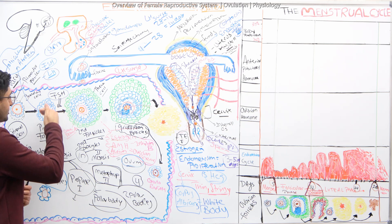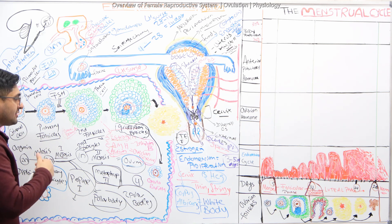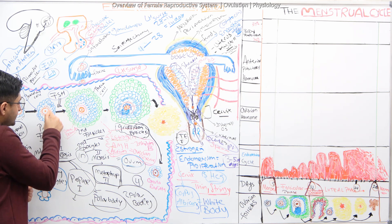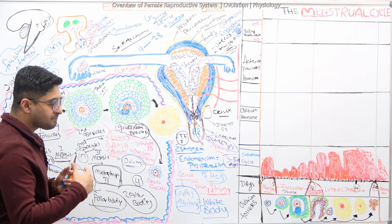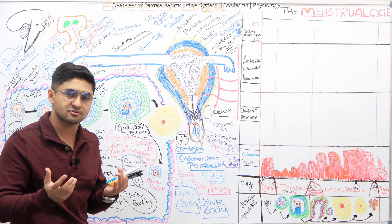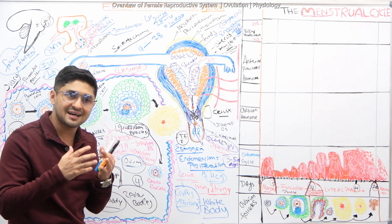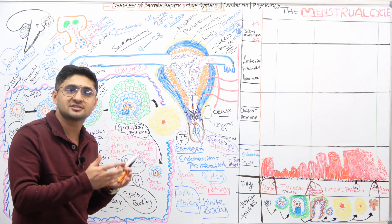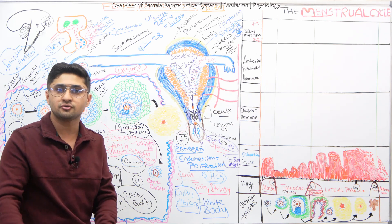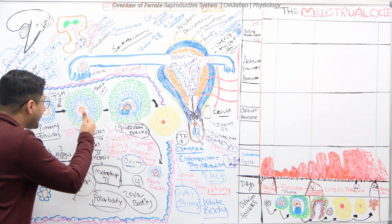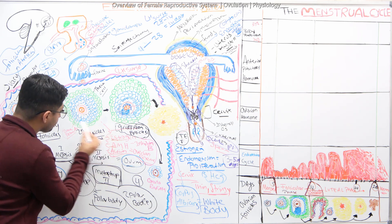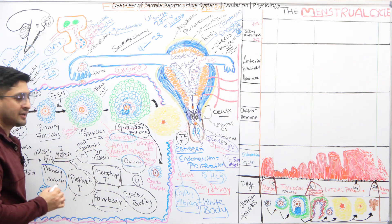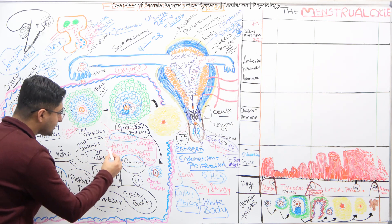Under the influence of FSH, the granulosa cells start making estrogens. The granulosa cells have FSH receptors and also an enzyme called aromatase, which converts male androgens into the female hormone estrogen. So the granulosa cells, under FSH influence, secrete estrogens.